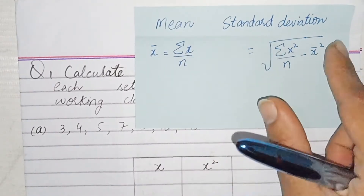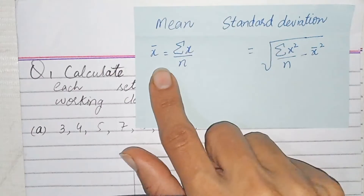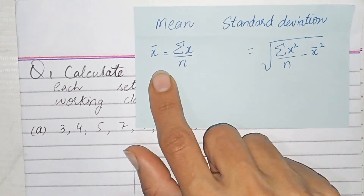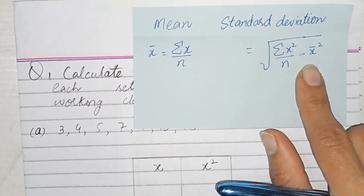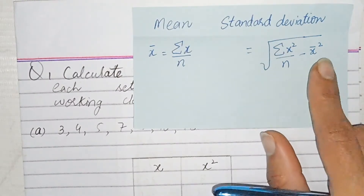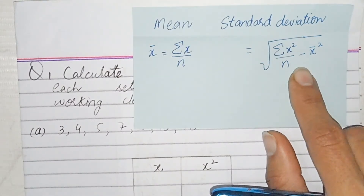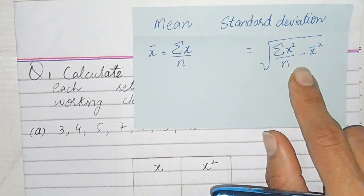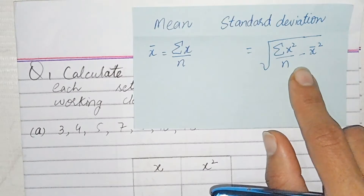To find the standard deviation, we first find the value of mean, then put that value into the formula. One thing I want to clarify: this formula is for ungrouped data. The formula is different for grouped and ungrouped data. Ungrouped data is data in which groups are not made — only simple values are given to us. This is the ungrouped formula.